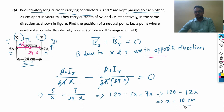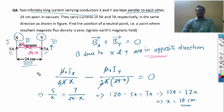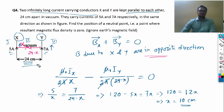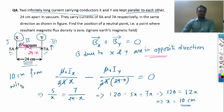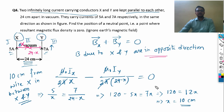Since the distance was in centimeters, the answer is in centimeters. The neutral point is at a distance of 10 centimeters from wire X, in between the two wires — in region 2. Always mention the position of the neutral point clearly.